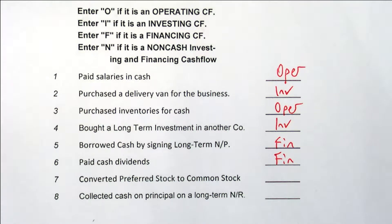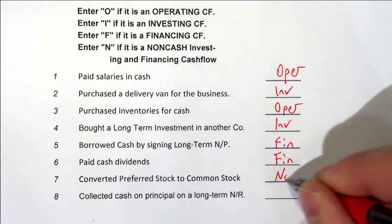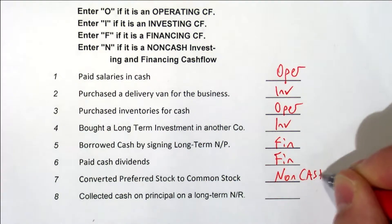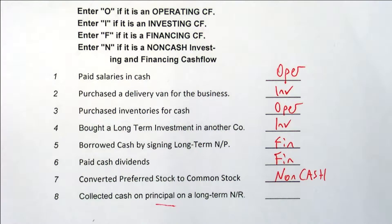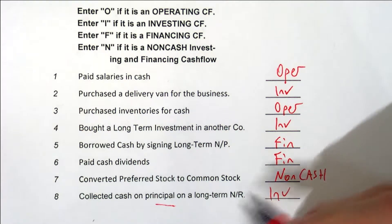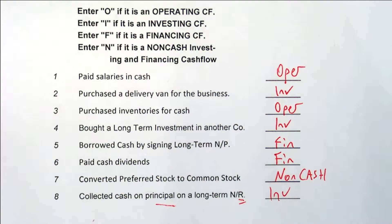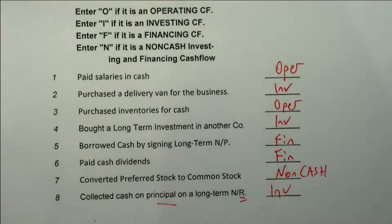Converted preferred stock to common stock — that is non-cash. And collected cash on principal on a long-term note receivable — investing. It's a long-term note receivable, so it's on the left side. So you guys are starting to get to know these.